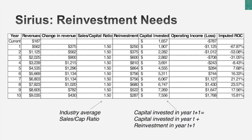Here's the final check I run: the reinvestment increases your invested capital each year. Since I knew the invested capital at the start of the period, I added reinvestment every year to get my estimate of invested capital each year. I divided after-tax operating income by that invested capital to get a return on capital every year. I wanted to make sure my return on capital in year 10 was a number I could live with. If it had been 3%, that would be too low — I'd reinvest less. If it had been 300%, I was reinvesting too little — I'd go back and tweak to reinvest more.